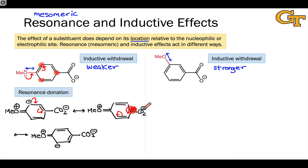Check out these two negative charges directly next to each other — looks pretty destabilizing. This is going to suggest that this carboxylate is actually not too stable relative to, for example, a substrate where there's just an H here instead of methoxy.